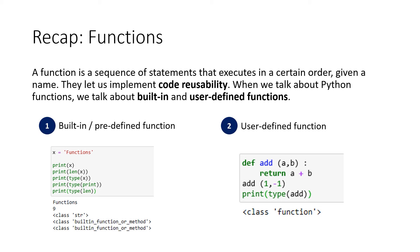Let's make a little recap of functions. First, the definition. A function is a sequence of statements that executes in a certain order, given a name. They let us implement code reusability. When we talk about Python functions, we talk about built-in and user-defined functions. So in short, functions are predefined and pre-coded and built-in into Python. For example, the len function or the type function. Then we have user-defined functions, and the use case behind this is that you can write your own function and reuse it later. So here we can say, okay, we want to define a function, we give it a name, and then we give it actually content. But that is not that important for now, just that you have seen your first user-defined function.